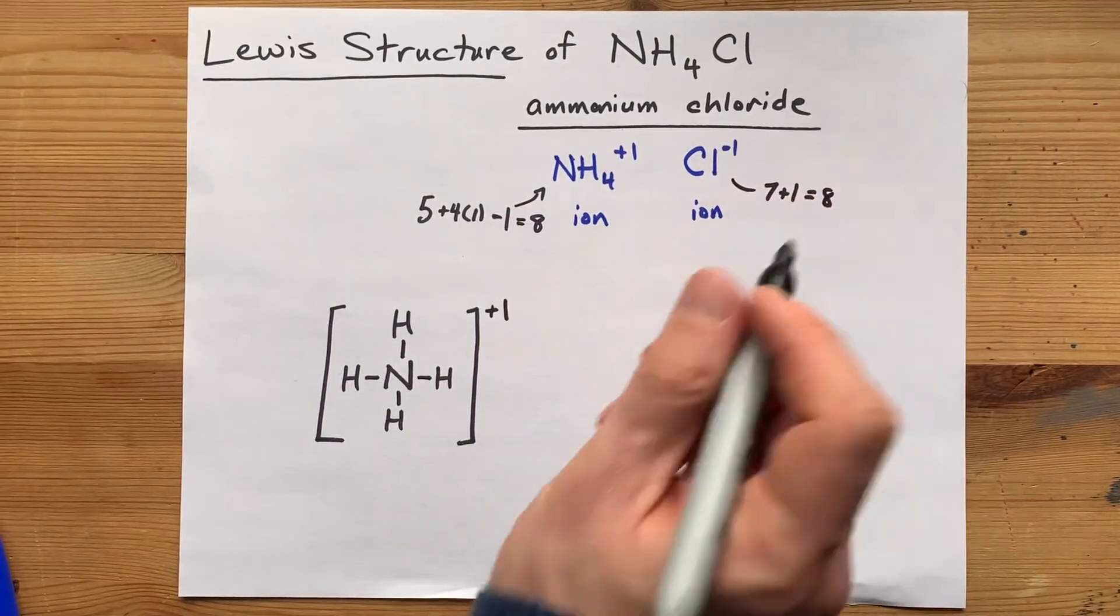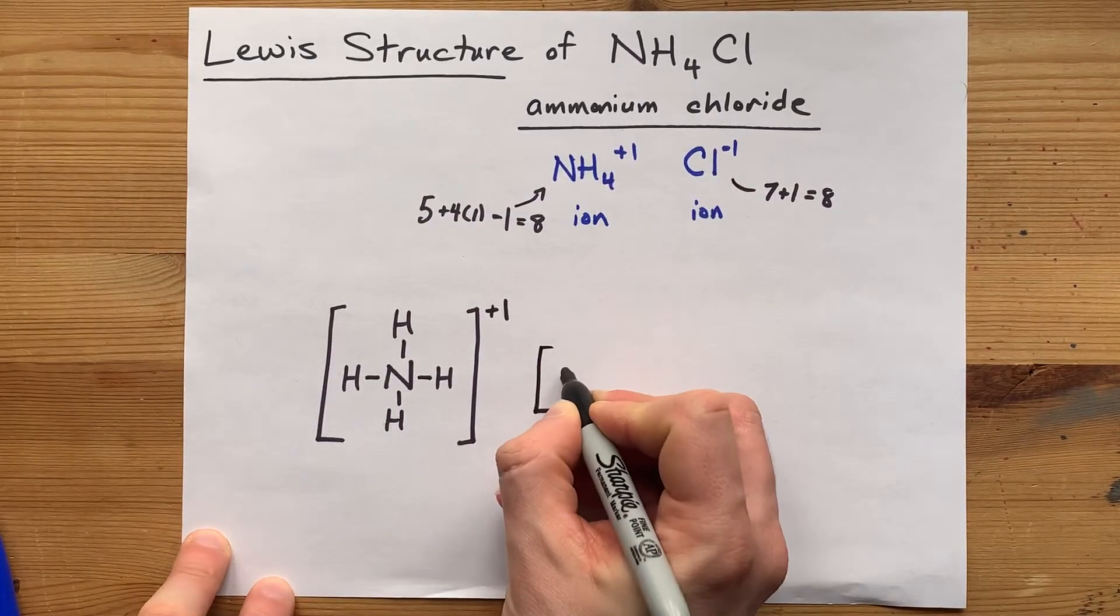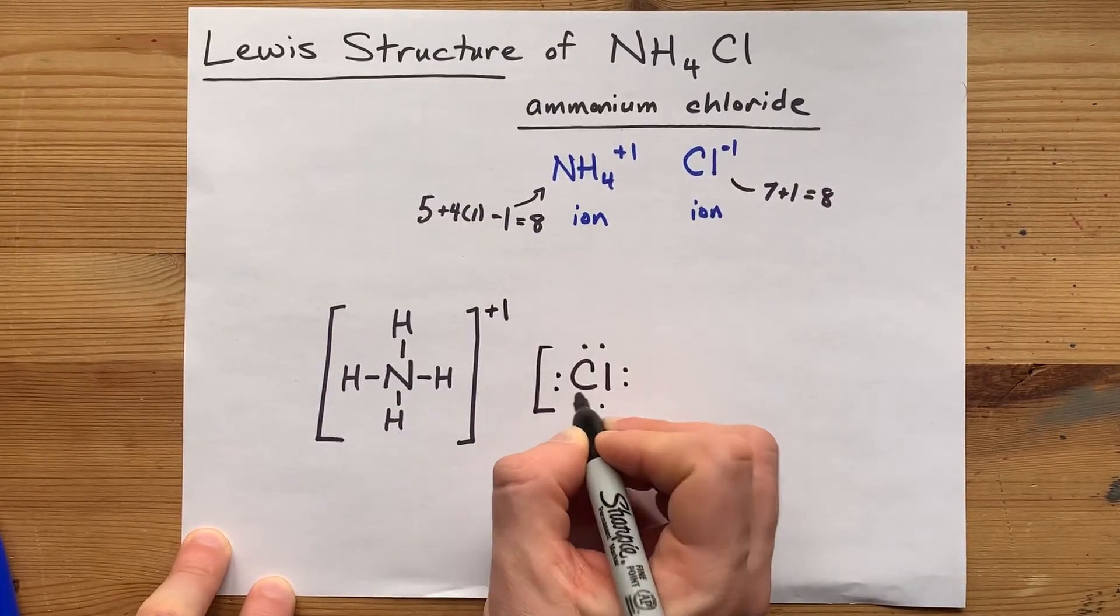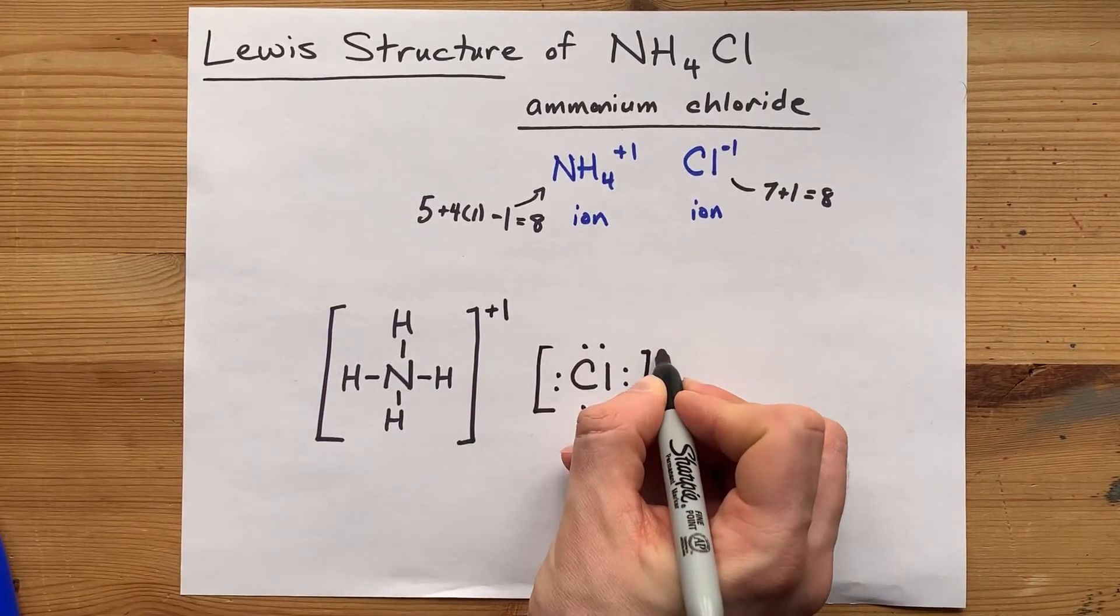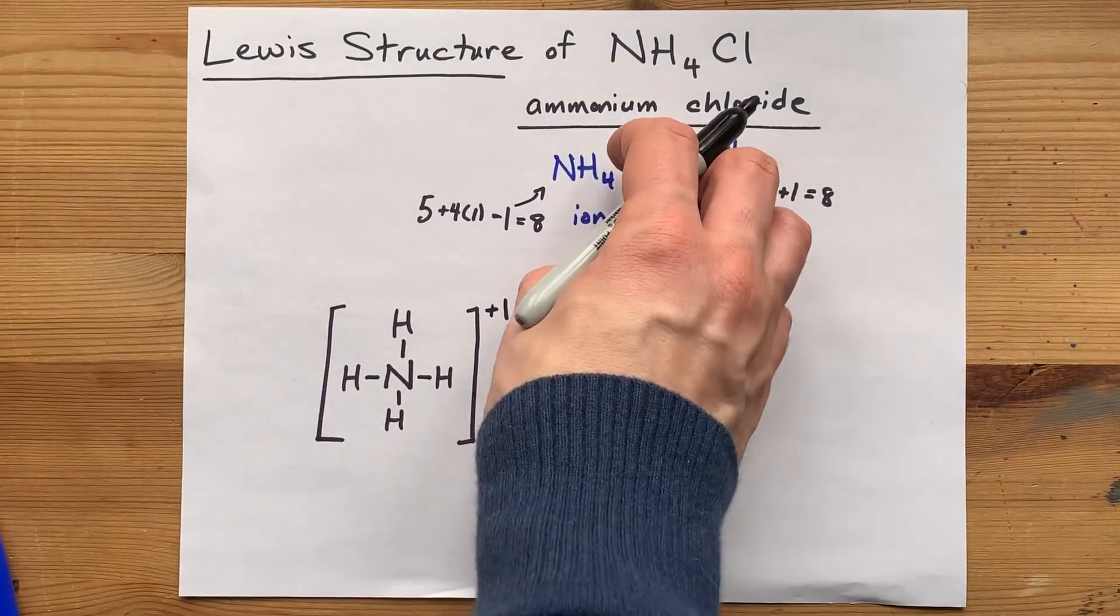That means that chlorine has eight valence electrons. So, I want you to draw a chlorine atom with one, two, three, four, five, six, seven, eight valence electrons. That is a minus one charge, because that's the charge on the chloride ion.